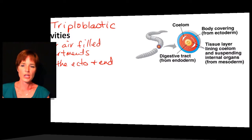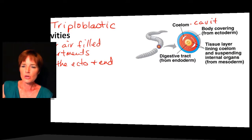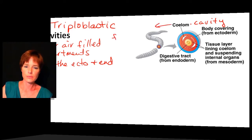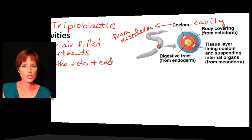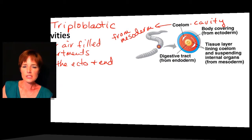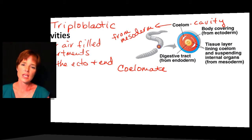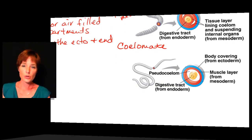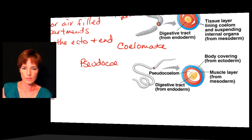To start off, we can have what we call a true coelom — the true body cavity. To be a true coelom, it needs to be developed from mesoderm tissue. In this picture the mesoderm is shown in red, so this cavity is going to be lined by the mesoderm, and these are what we call coelomate organisms. Coelomate organisms have a true coelom meaning it has formed completely from mesoderm tissue.